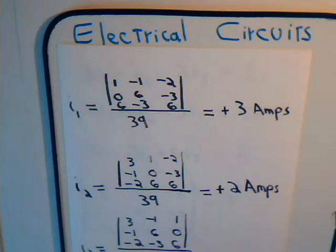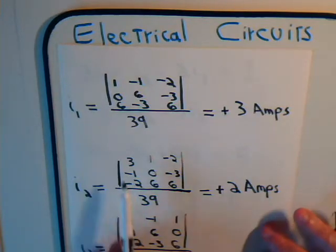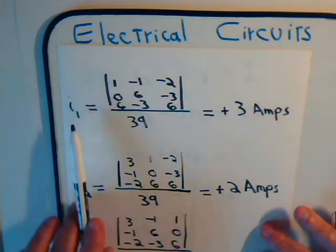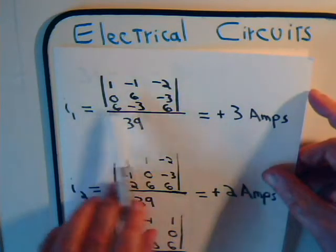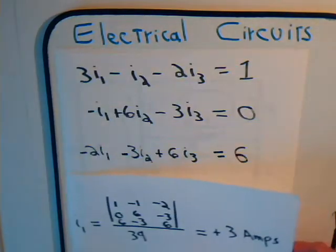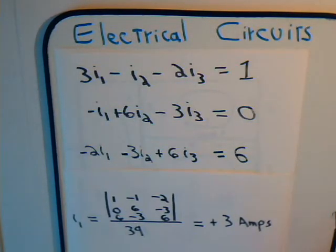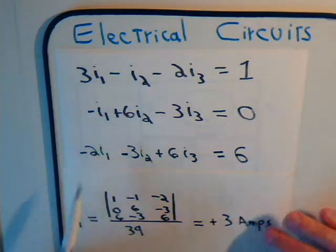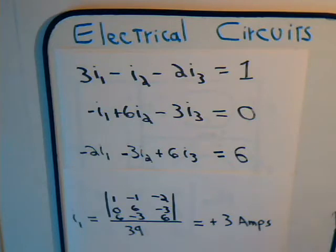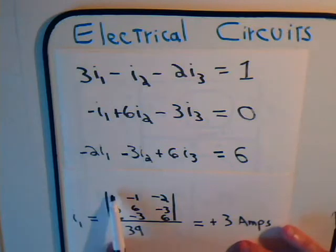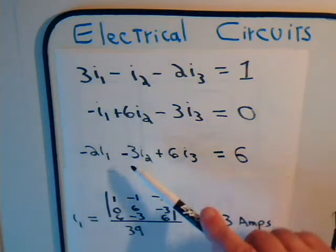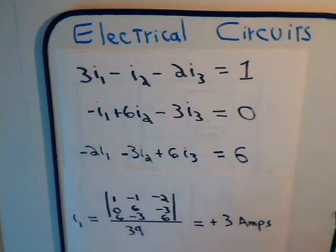Now we are about to determine the value for current I3. The way that we formed these matrices - here we wanted to determine the value of I1. Actually these are determinants. We went back to this matrix and the coefficients, these column coefficients for I1, and replaced it with these numbers, which we have right here.